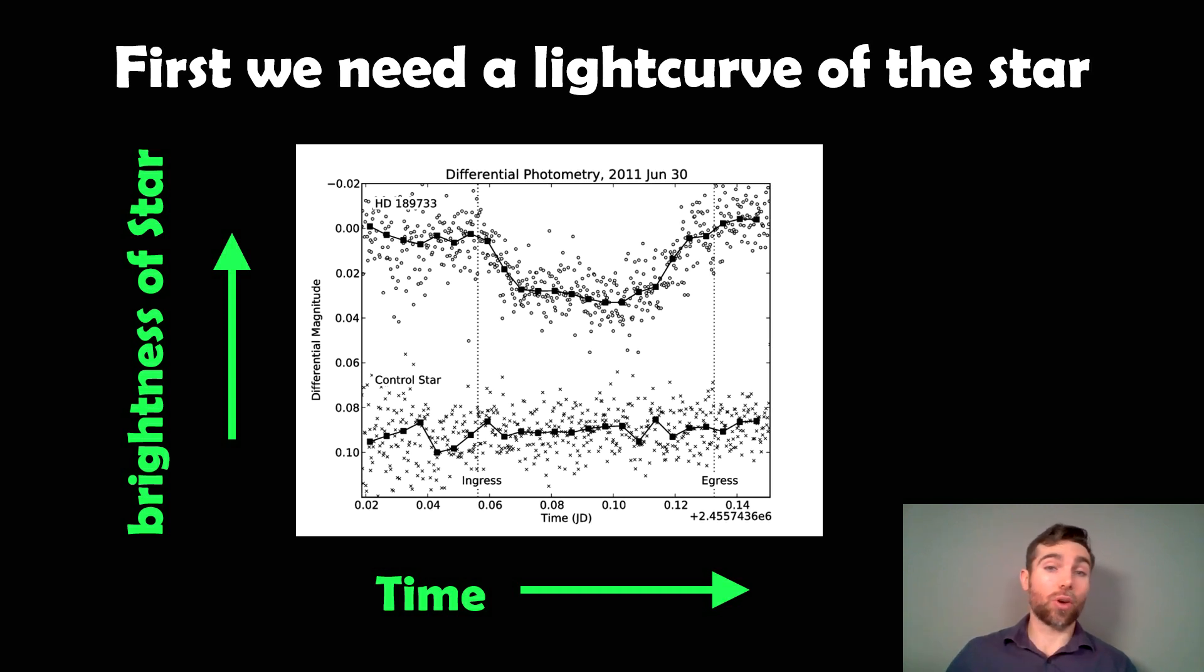You should have a control star, reference star, or standard star that's nearby to the star you're actually measuring. It should be fairly flat in its variability, so it shouldn't be varying much. You can use that to remove any changes that may be introduced from things like the system, or if you're doing it from the ground, any atmospheric differences from looking at different parts of the sky.